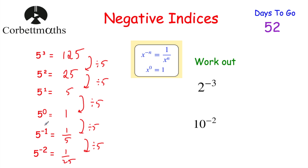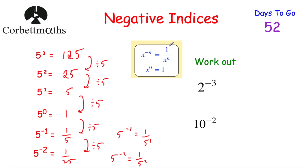This is really useful because there's a pattern we can spot. 5 to the power of negative 1 equals 1 over 5 to the power of 1, and 5 to the power of negative 2 equals 1 over 5 squared, because 5 squared is 25. So if you've got a negative power, just write 1 over the number with the positive power. The general rule is: x to the power of negative n equals 1 over x to the power of n. So with a negative power, you write 1 over, then change the power to a positive.